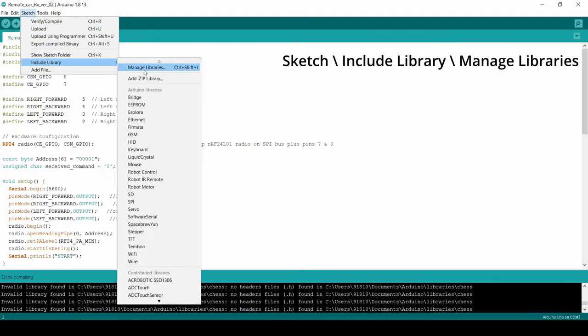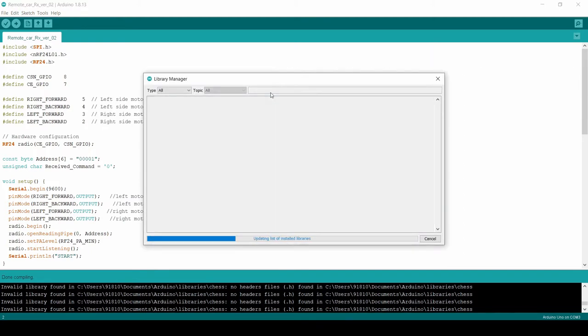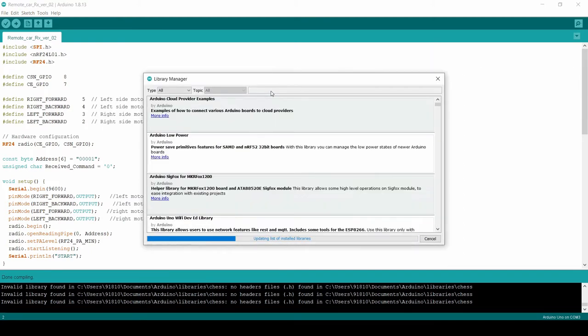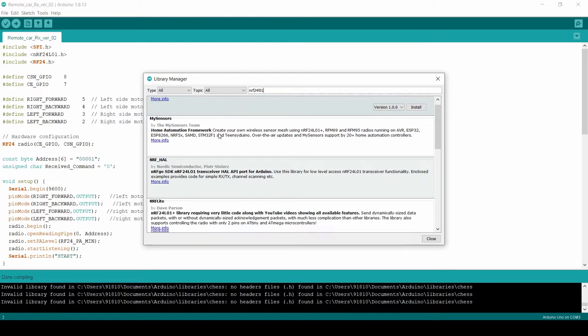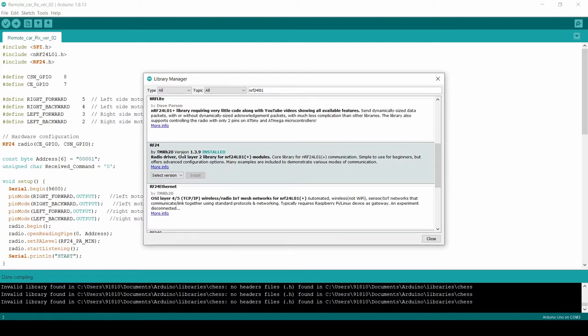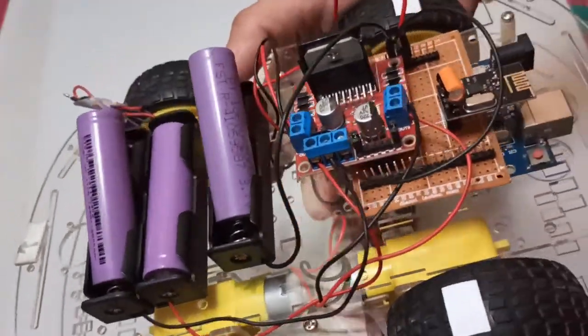Before uploading the code, install the RF24 module library from manage libraries menu. Please be careful with lithium-ion batteries.